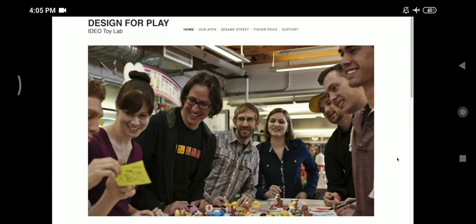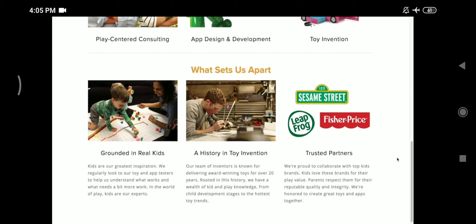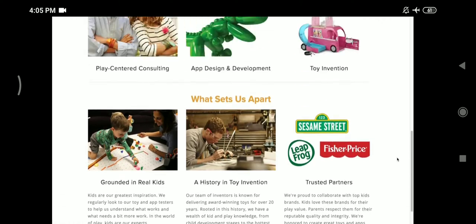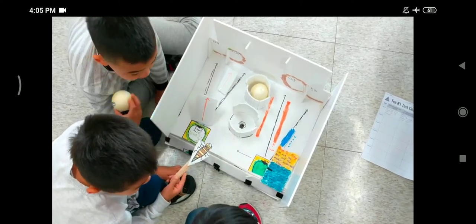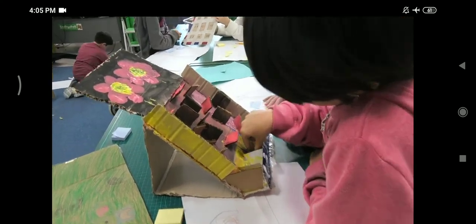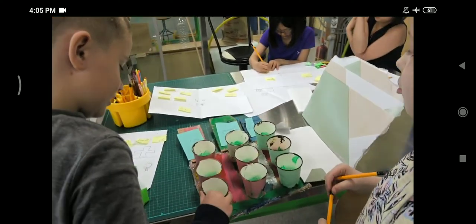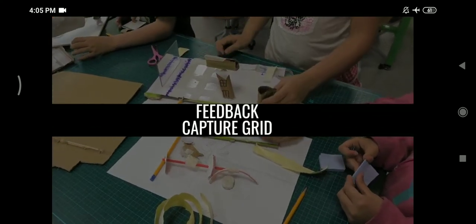IDIO Toy Lab is a division of IDIO that designs toys and mobile apps inspired by kids' curiosity, imagination, and desire to play and learn. In this video I want to show you an awesome observational and feedback tool from the D School that our second grade students used during the testing phase. It is called the feedback capture grid.